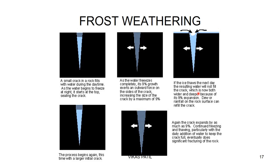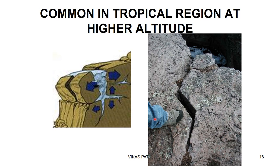Frost weathering involves water and temperatures that change from below freezing point to above freezing point. During the day, as temperatures are slightly higher, water enters into cracks. During the night, temperatures fall below freezing point, causing the cracks to widen. Water has the special property of anomalous expansion — when it freezes, it pushes the crack wider. There is a continuous freezing and thawing of water and a constant push to make the crack wider. Eventually, the crack becomes wide enough to cause the rock to break.